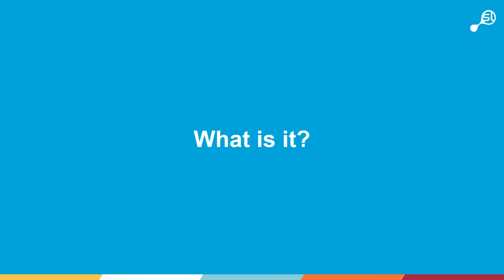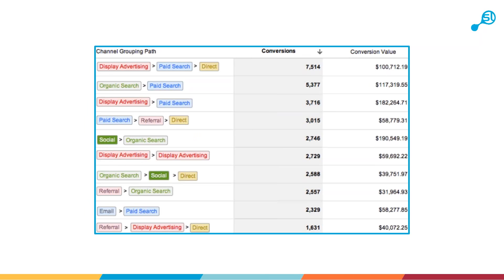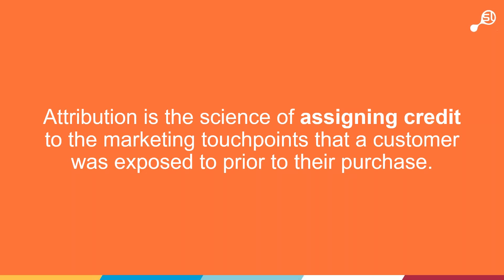So, what is attribution? Attribution has been around for some time. We've seen reports in analytics showing that different marketing channels interact to deliver conversions. Attribution is the science of assigning credit to those marketing touch points that a customer was exposed to prior to their purchase. It is a data-based science of assigning credit — it is not choosing some predefined model, it's not guesswork, it's backed up by data.